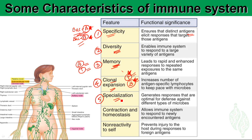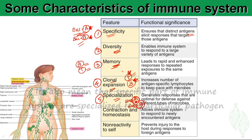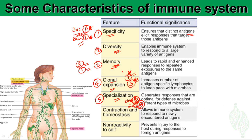The fifth characteristic is specialization. When bacteria A enters the body, the immune response mounts a strong and large reaction specifically to bacteria A. When bacteria B enters, the immune system reacts strongly to bacteria B. It is not the case that when A is present the immune system mounts a reaction to bacteria B — the system is very specialized to each specific type of bacterium or virus.